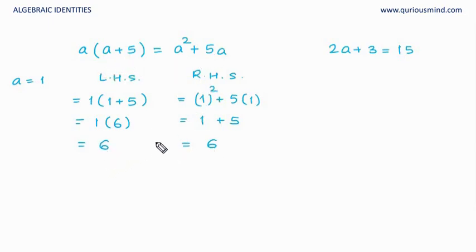So, 6 is equal to 6. Very good. Let's take replace a is equal to 1 here. So, my LHS would be 2 times 1 plus 3, that is 2 plus 3 and that is equal to 5. Whereas, my RHS is equal to 15 and they are not equal. So, definitely a is equal to 1 is not solution of this equation or we can say that this equation does not hold true for the value a is equal to 1.